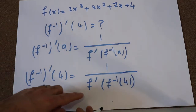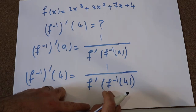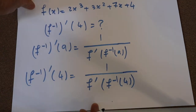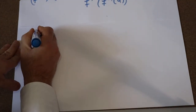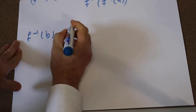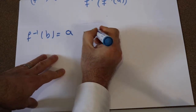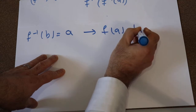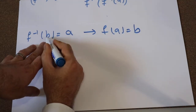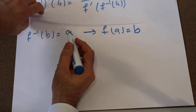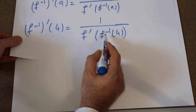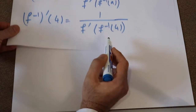So here, you need to calculate the inverse of this function at point 4. We know that if f⁻¹(b) is equal to A, you can conclude f(A) is equal to b. So here, b is equal to 4 because we want to calculate the inverse of f at 4.